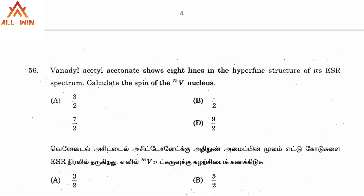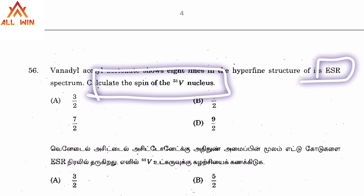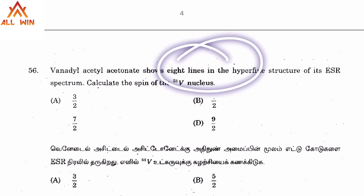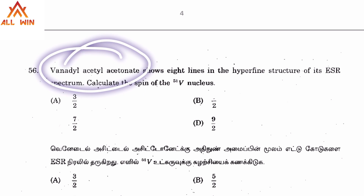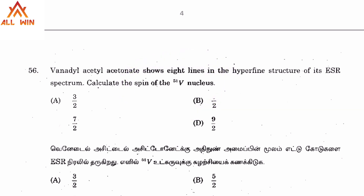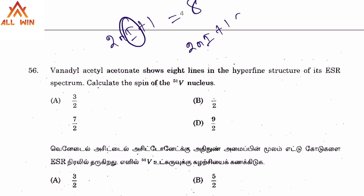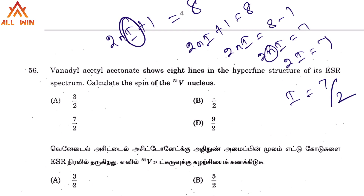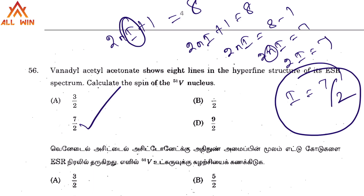Vanadyl acetylacetonate shows 8 lines in the hyperfine structure of its ESR spectrum. We need to find the nuclear spin of the V51 nucleus. Using the formula 2nI + 1 = 8, we get 2I = 7, so I = 7/2. Therefore the nuclear spin of V51 is 7/2, and option C is the correct answer.